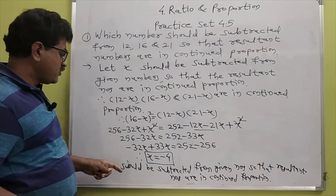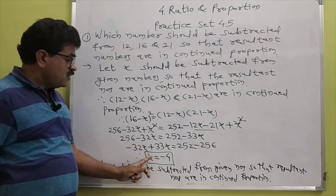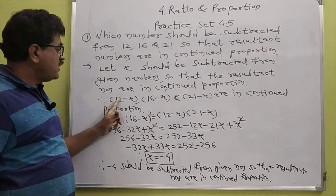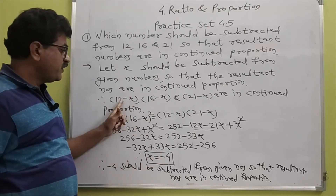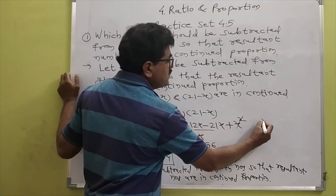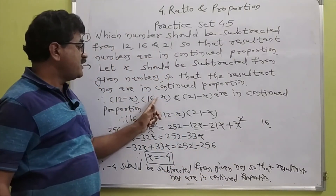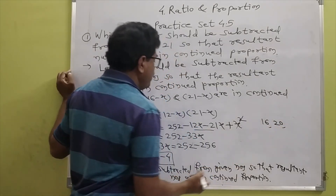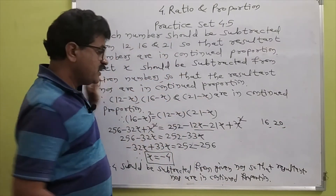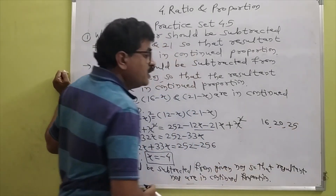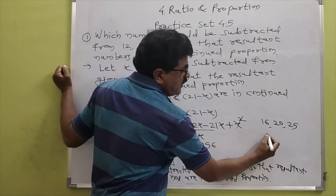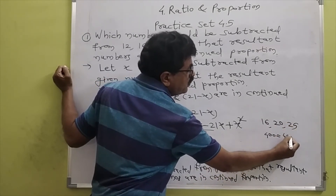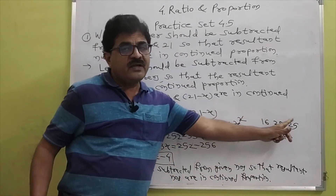Now we verify whether this is correct. X is minus 4 subtracted: first number is 12 minus of minus 4, that is 12 plus 4 equals 16. Second: 16 plus 4 equals 20. Third: 21 plus 4 equals 25. Now, 20 squared is 400, and 16 into 25 is also 400. So B squared equals AC, confirming continued proportion.